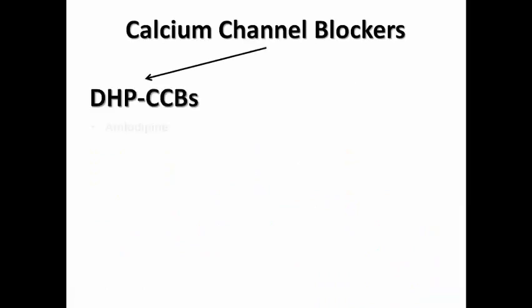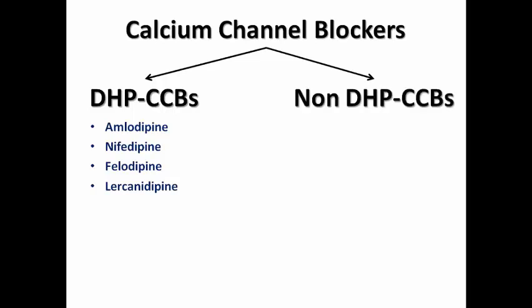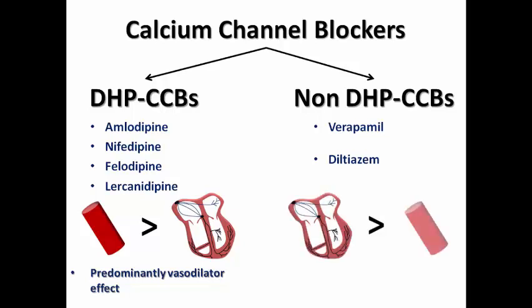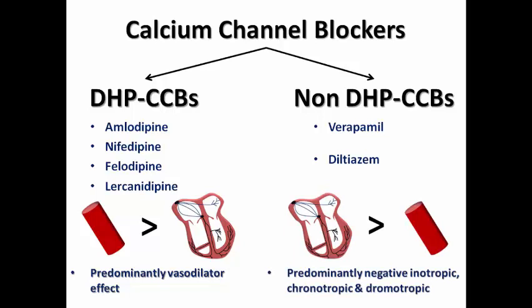This action on vascular smooth muscle results in vasodilator effects, and on the myocardium results in a negative inotropic effect — depressing contractility — plus negative chronotropic and negative dromotropic effects on the conductive system, decreasing heart rate and slowing conduction velocity. We have two subtypes: the dihydropyridine (DHP) family — amlodipine, nifedipine, felodipine, lercanidipine — and the non-DHP family — verapamil and diltiazem.